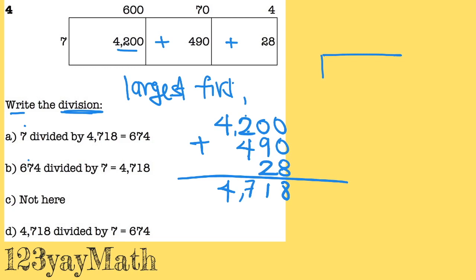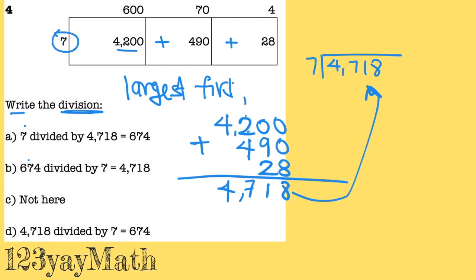And I'm going to place this number inside my box, so 4,718. As you can see, this is inside of the box, and this goes inside of the box. Now, my divisor goes the same — you don't even have to think anything about that.